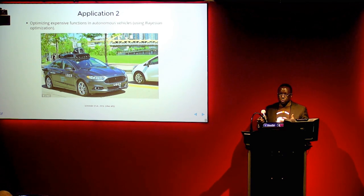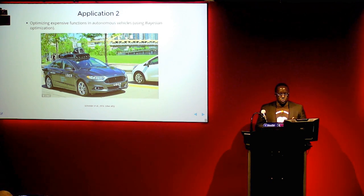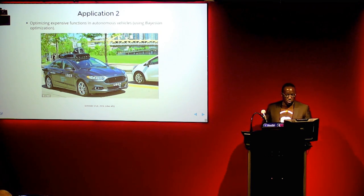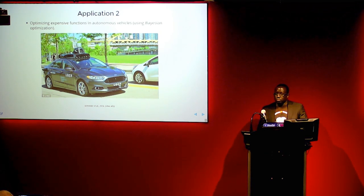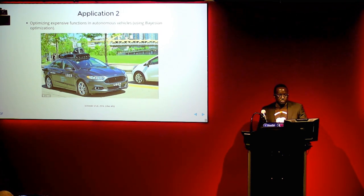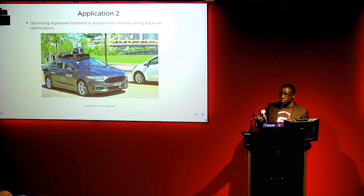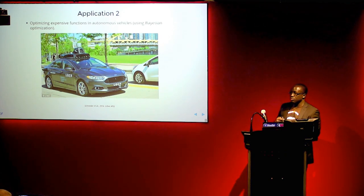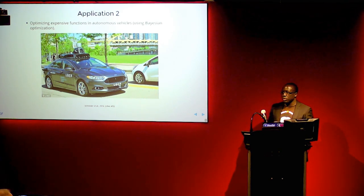The second application is in autonomous vehicles — particularly Uber. Uber's AI vehicle uses a probabilistic approach called Bayesian optimization to automatically develop models that can learn parameters from the expensive black-box functions used in their system. They applied Bayesian optimization for deep neural networks to learn parameters in those networks automatically.